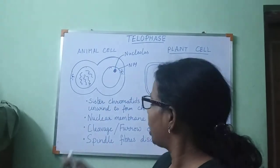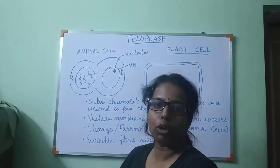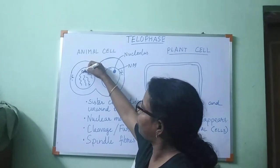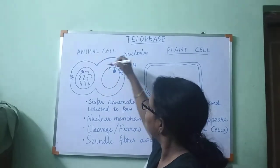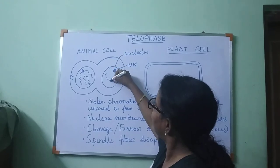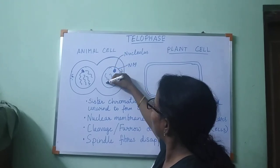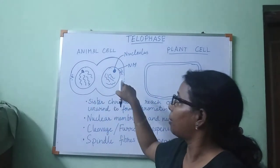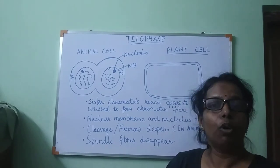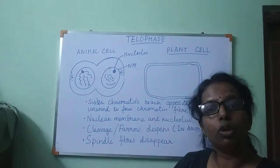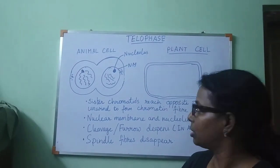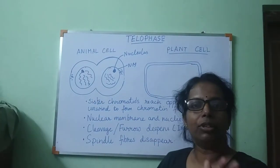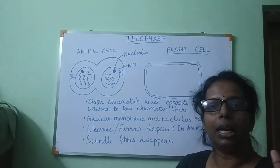So how many chromatin fibers would be formed? Four chromatin fibers would be formed. You should not forget to draw the nucleolus. There were four chromosomes, so you have to draw four chromatin fibers. This is how the complete division of the DNA takes place.